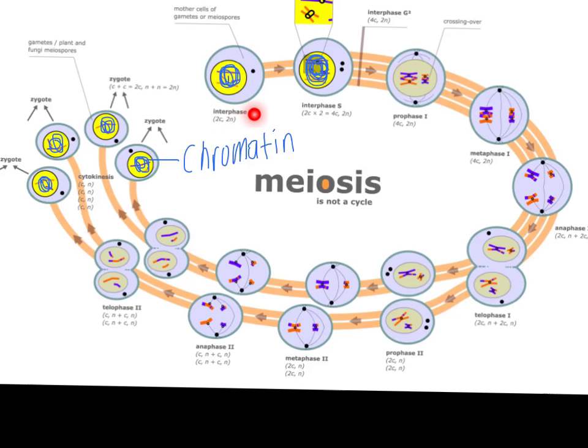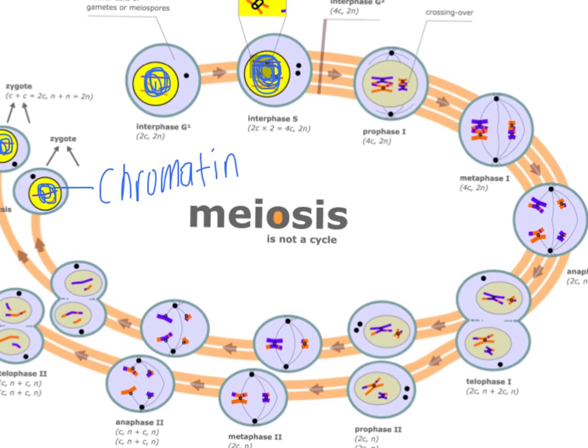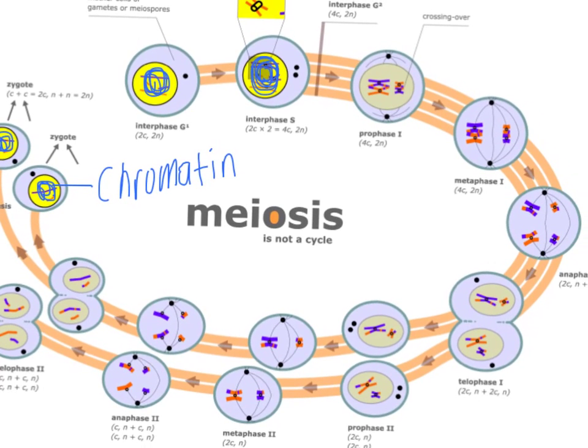There's still interphase where the cell is preparing to divide. There's still prophase, but now if we're looking at prophase over here, they call it prophase 1 because it's a little bit different than what we were dealing with before. The key reason that this prophase stage is different is this thing right here — up there, it says crossing over.